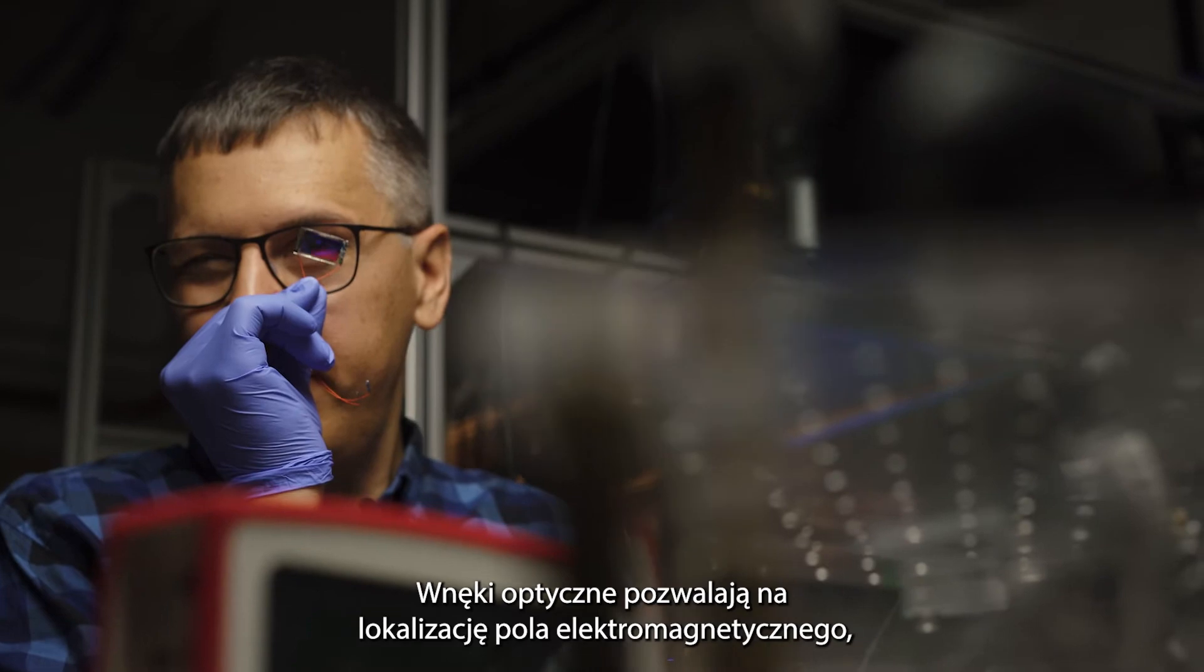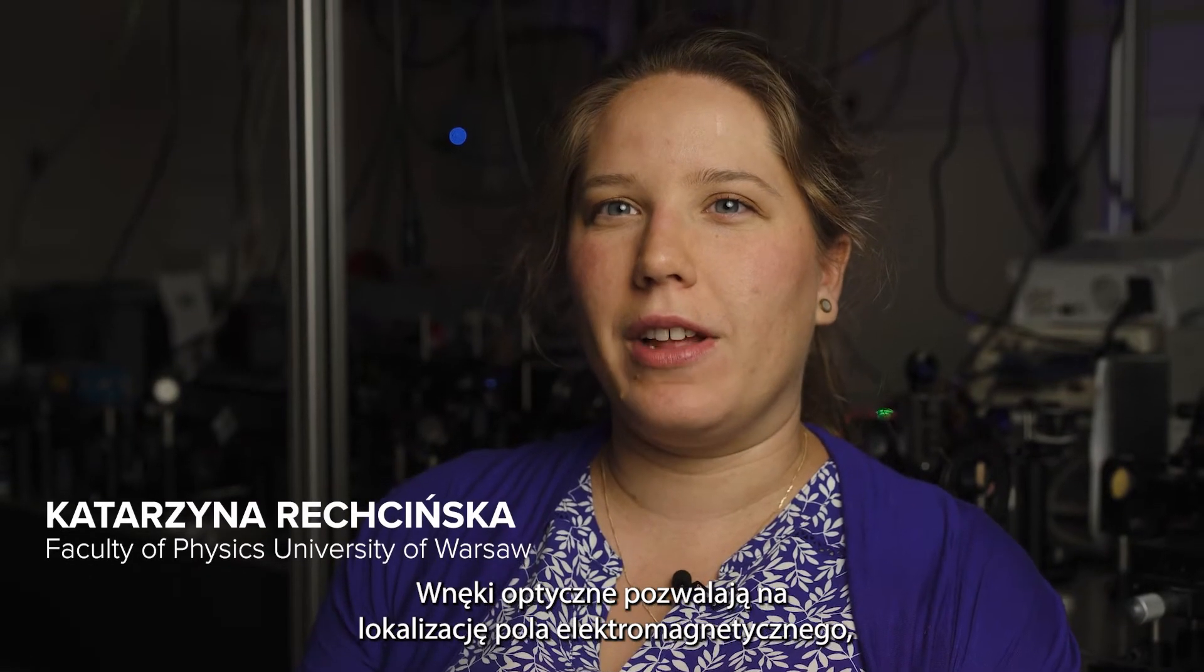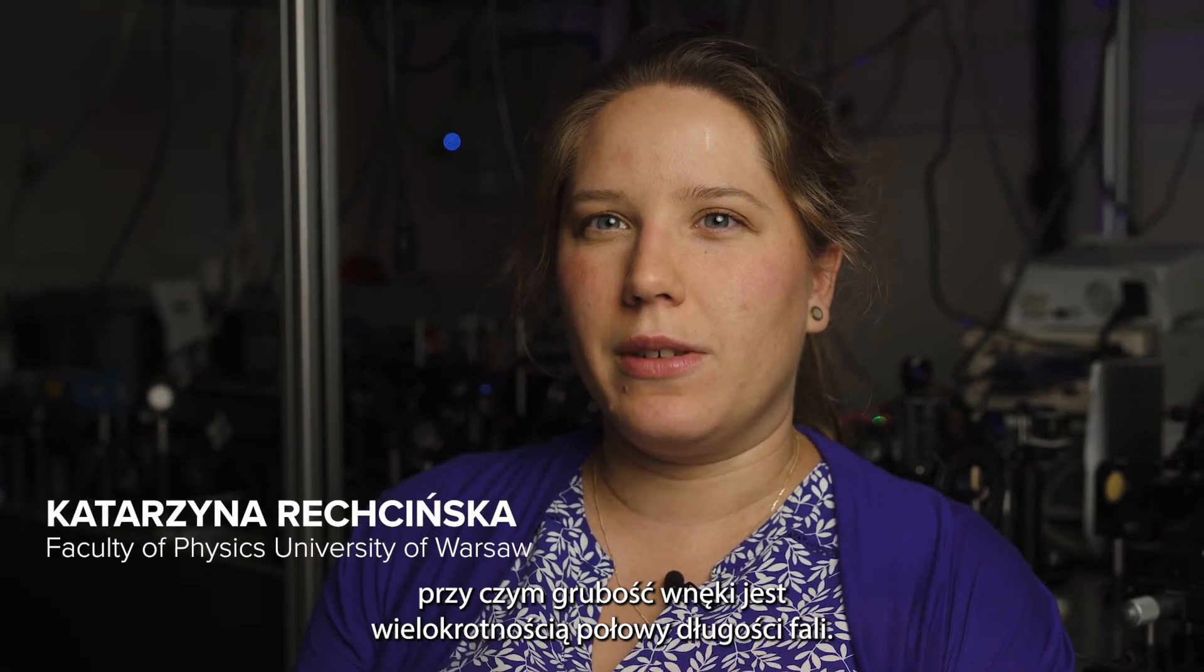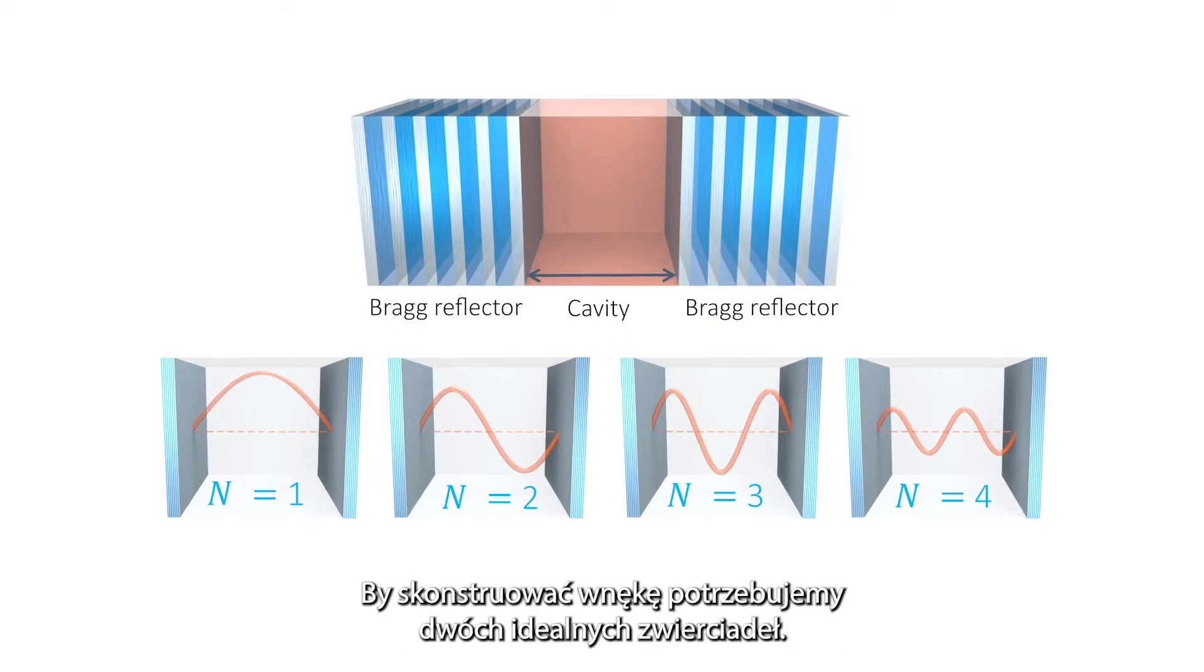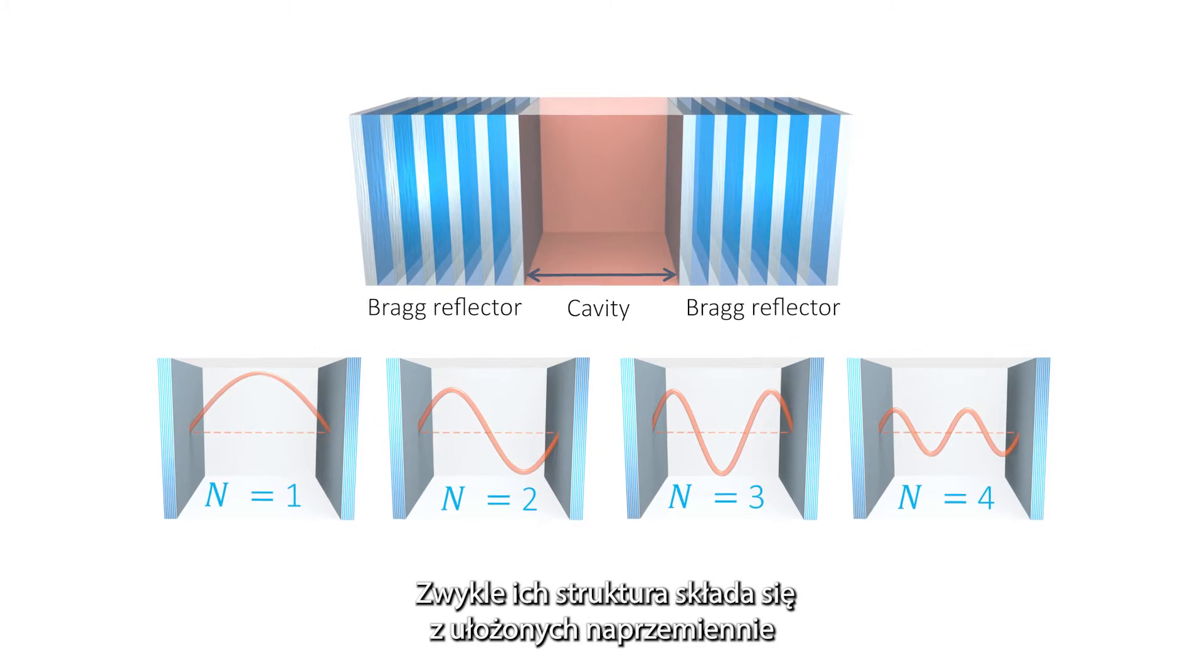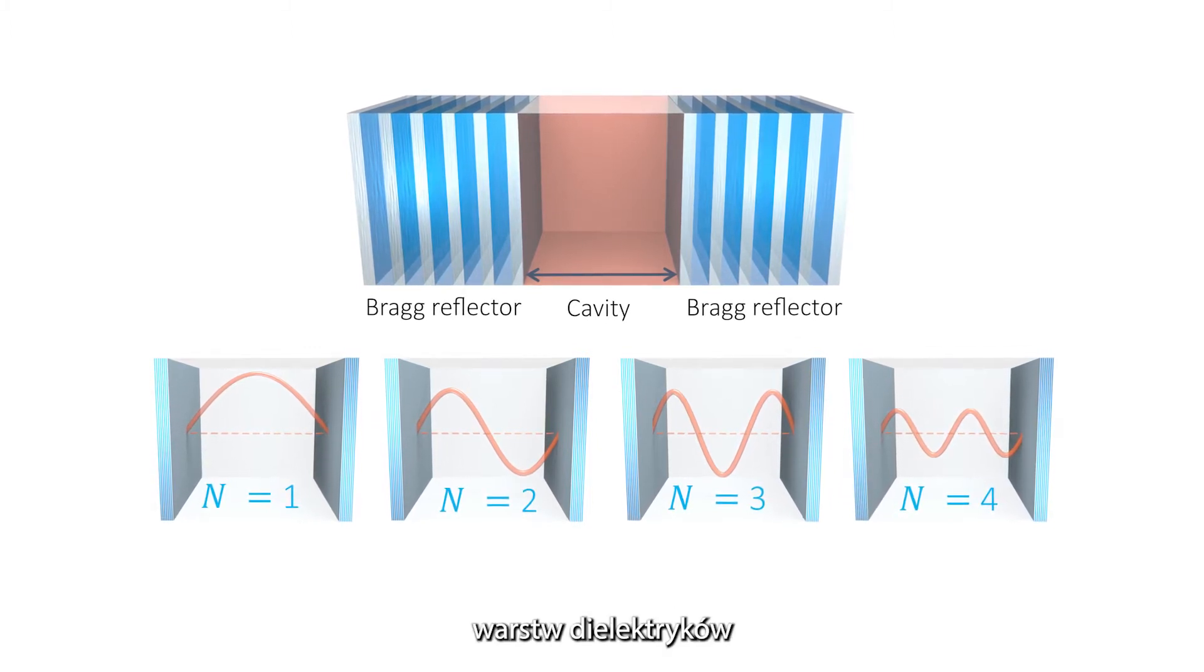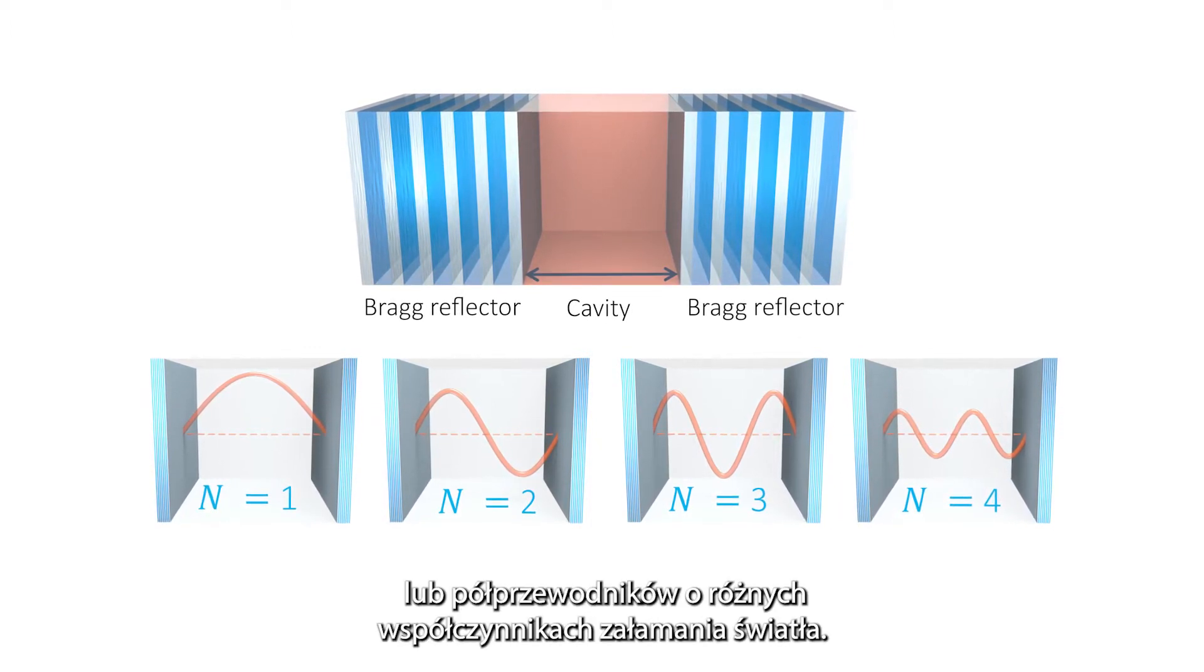Optical cavities allow for localization of electromagnetic field where the length of the cavity translates into successive halves of the wave. To build cavity, we need two perfect mirrors. Typically the structure consists of dielectric or semiconductor layers, alternating layers with different refractive indices.